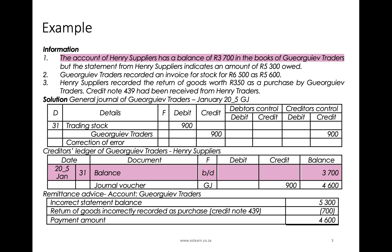Let's have a look at this example. The account of Henry Suppliers has a balance of $3,700 in the books of Georgia of Traders, but the statement from Henry Suppliers indicates an amount of $5,300 owed. So in your creditor's ledger you've got a balance of $3,700, but they think you owe them $5,300. That's how we're going to set up our initial reconciliation.